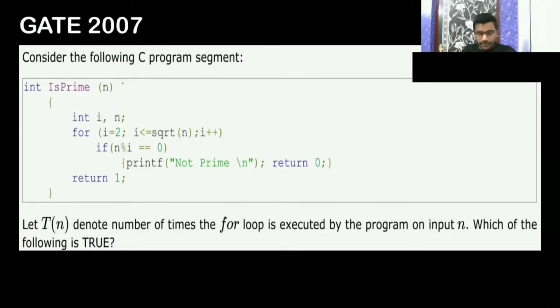So it is saying that, consider the following C program segment. The T(N) denotes the number of times the for loop is executed by the program on input N. When the input is N, the for loop is going to be executed. Which of the following is true?